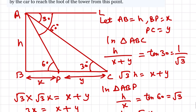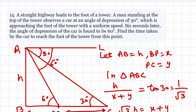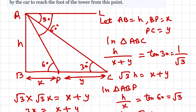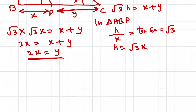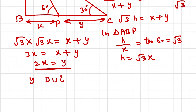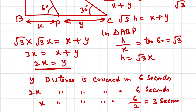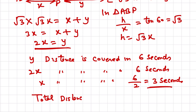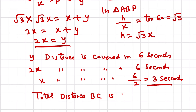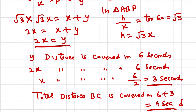So y = 2x. The car covers y distance in 6 seconds. Since y = 2x, the car covers 2x in 6 seconds, so x is covered in 3 seconds. Total distance BC = x + y is covered in 6 + 3 = 9 seconds. The car takes 9 seconds total to reach the foot of the tower from the initial point.